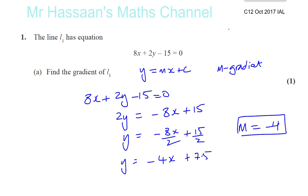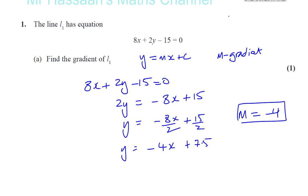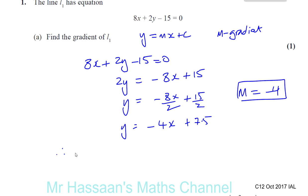So we can say the gradient, therefore, just to make it clear, therefore, the gradient of line 1 is equal to negative 4. Okay, that's part A done.